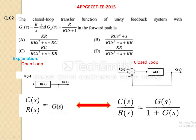The next question is from the TG 2015 paper. We need to find the closed-loop transfer function of a feedback system with G1 and G2 in the forward path. Since both G1 and G2 are in the same forward path, the overall forward path gain is G(s) = G1·G2. With H(s) = 1, we can directly apply the basic closed-loop formula: G(s) / (1 + G(s)·H(s)).